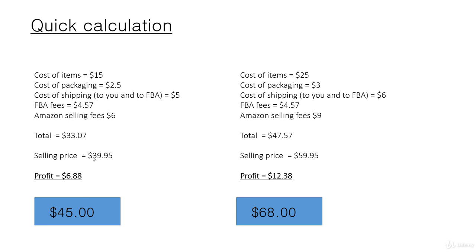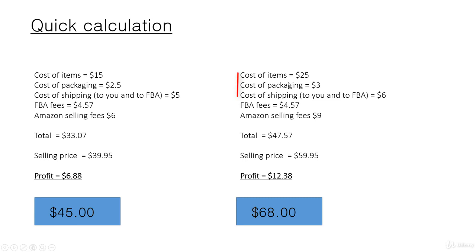It's better to start off with a relatively lower price and cut your profit margins a bit. Here's another example of a slightly higher value bundle. If your cost of items was $25, your packaging was $3, and your shipping was $6 in total, and your FBA fees — if your selling price was set at $59.95, your selling fees would be $9. Your total cost would be $47.57, giving you a profit of $12.38. If we did the original calculation of cost of goods excluding fees times 2, that would have been $68. But if we list at $59.95 to try and get more sales, the profit would be $12.38.